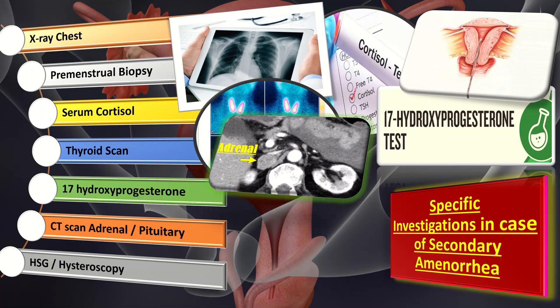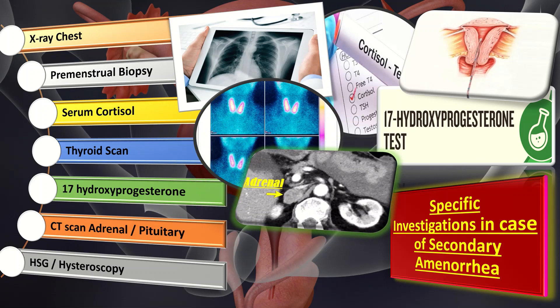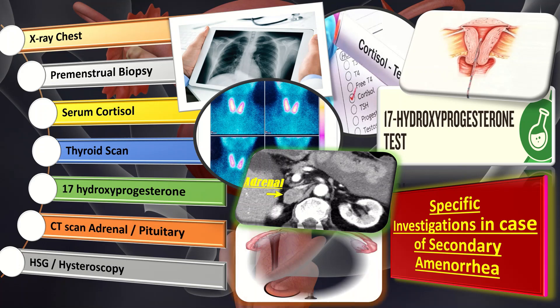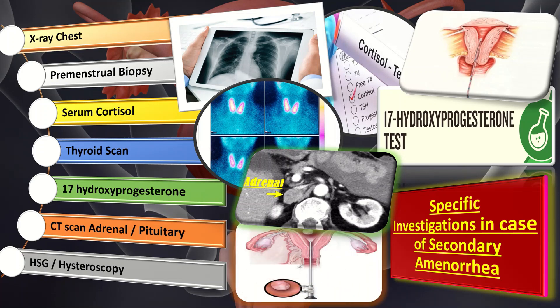CT scan of the adrenal gland is done to diagnose adrenal tumor. CT scan of the pituitary gland is done to diagnose pituitary tumor. And in order to diagnose Asherman's syndrome, we do HSG, and nowadays hysteroscopy is preferred as compared to HSG.